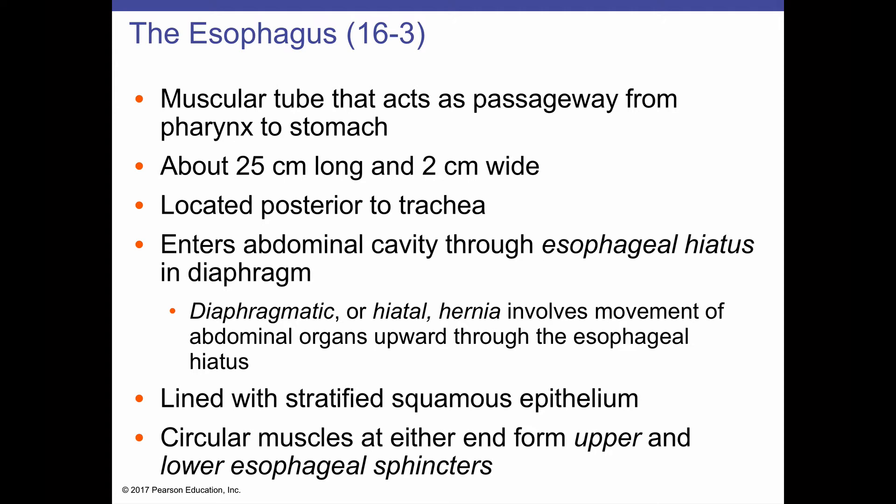The esophagus sits behind the trachea and passes through the thoracic cavity within the mediastinum, then through the diaphragm. The portion of the esophagus that passes through the diaphragm is called the esophageal hiatus — a small opening that should not allow other organs to move from the abdominal cavity up into the thoracic cavity. When that does occur, we call it a hiatal hernia, which is the movement of abdominal organs upward through the esophageal hiatus.